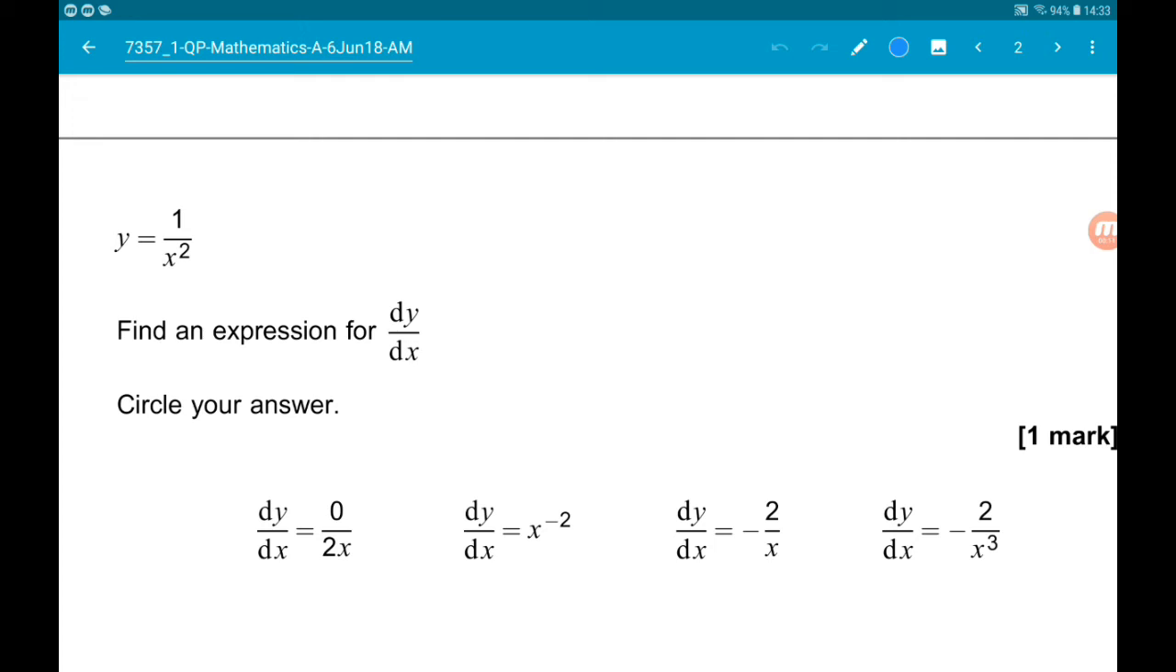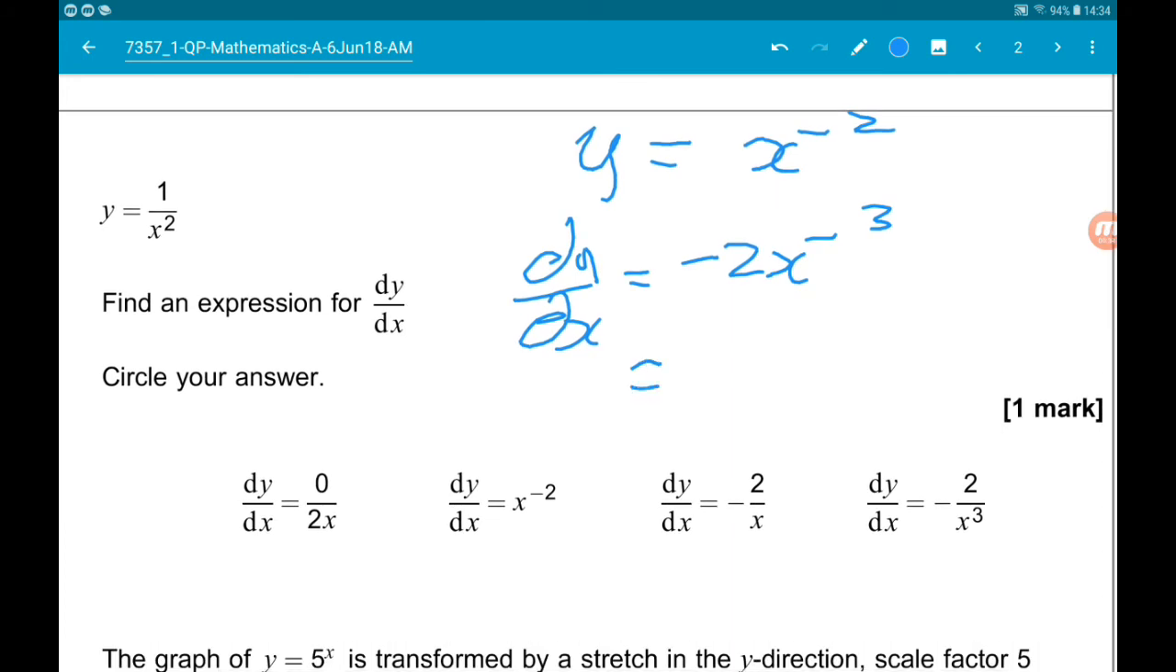So first up let's rewrite y as x to the minus 2. And then dy/dx is minus 2x to the minus 3. Now that is minus 2 over x cubed. So that's all. Cool.